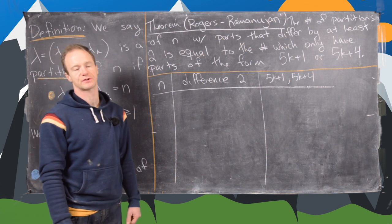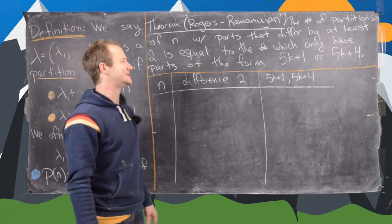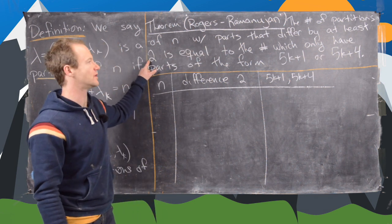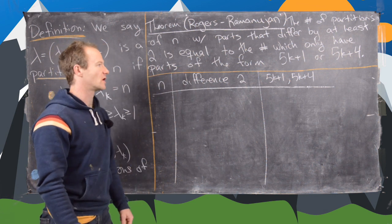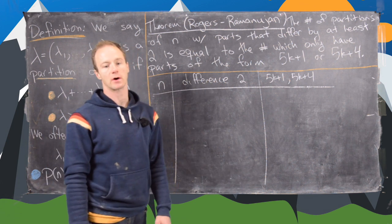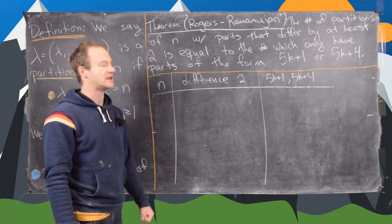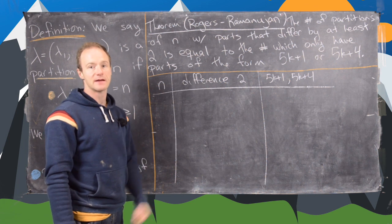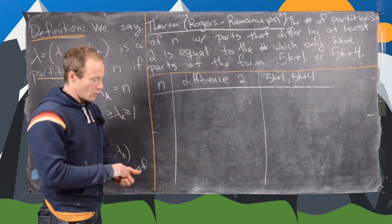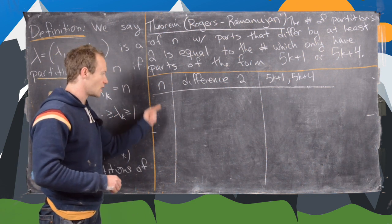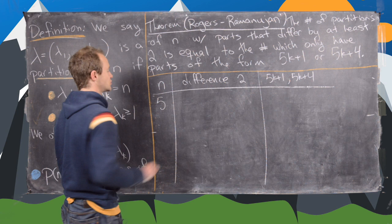Now let's look at the Rogers-Ramanujan theorem. It states that the number of partitions of n with parts that differ by at least 2 is equal to the number of partitions that only have parts of the form 5k plus 1 or 5k plus 4. This is an astounding theorem and the goal of this series is to eventually prove it. Let's look at some numerical evidence, starting with n equals 5.